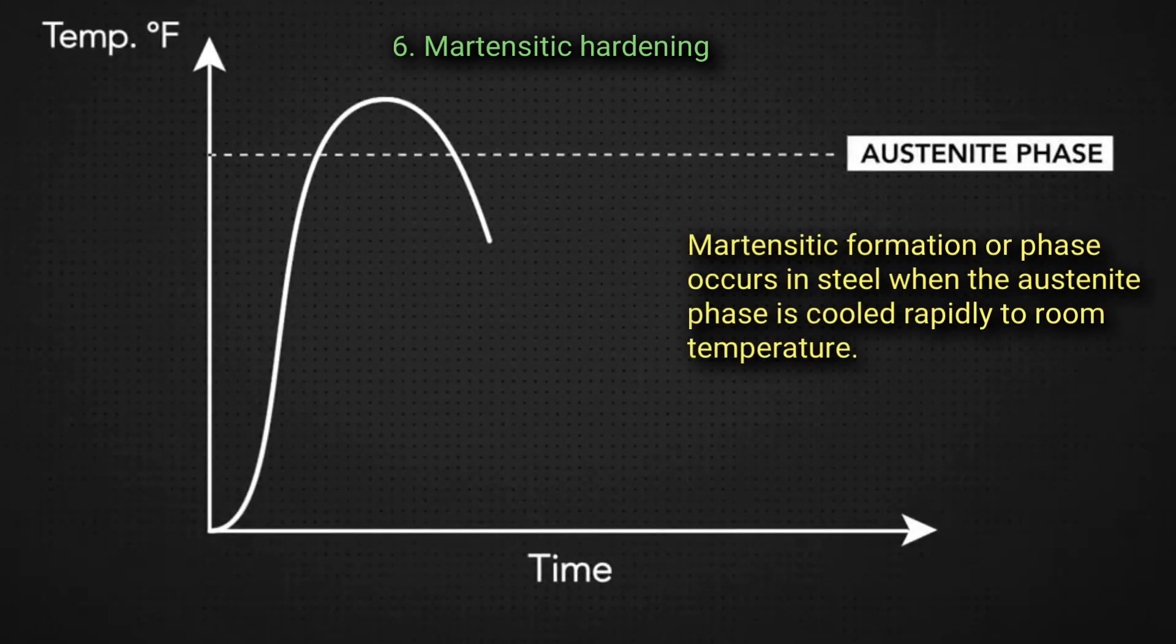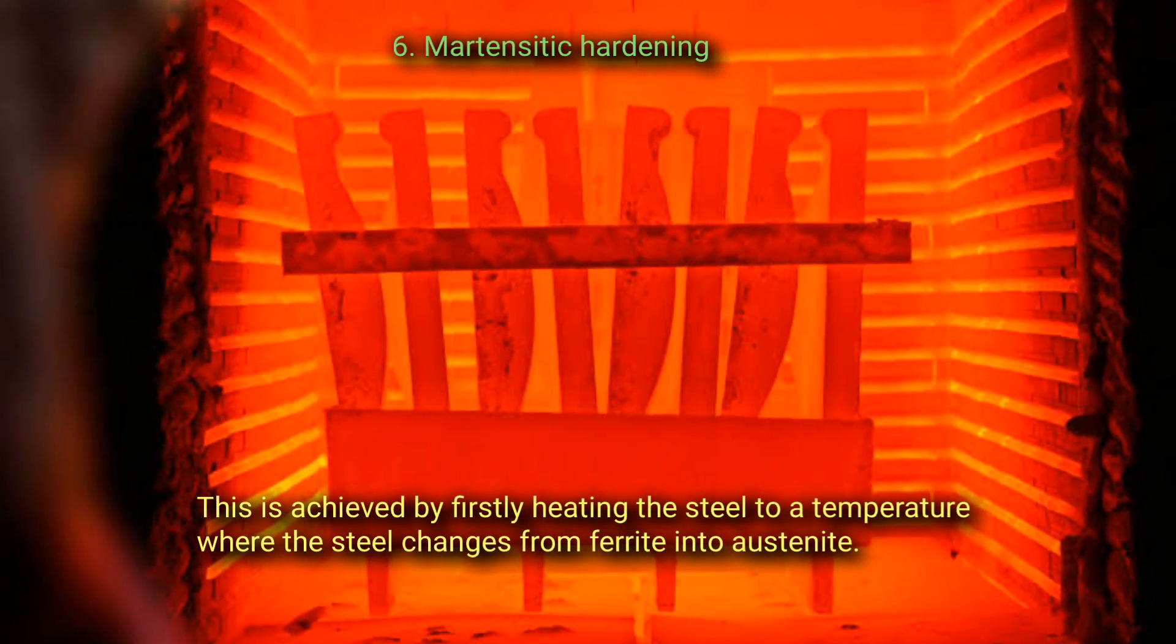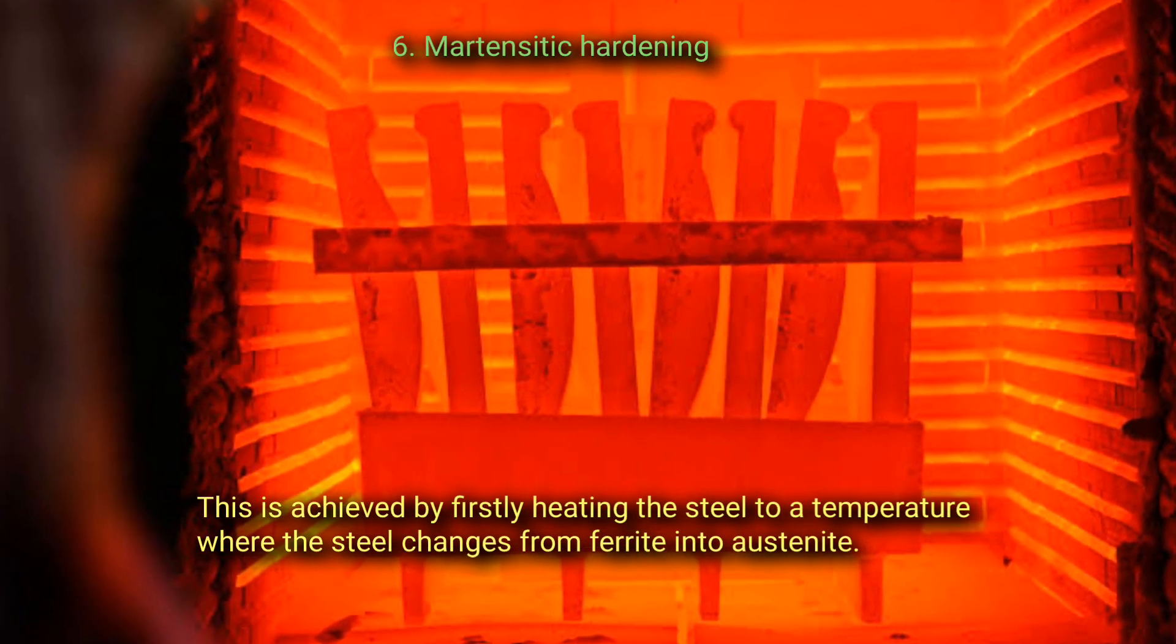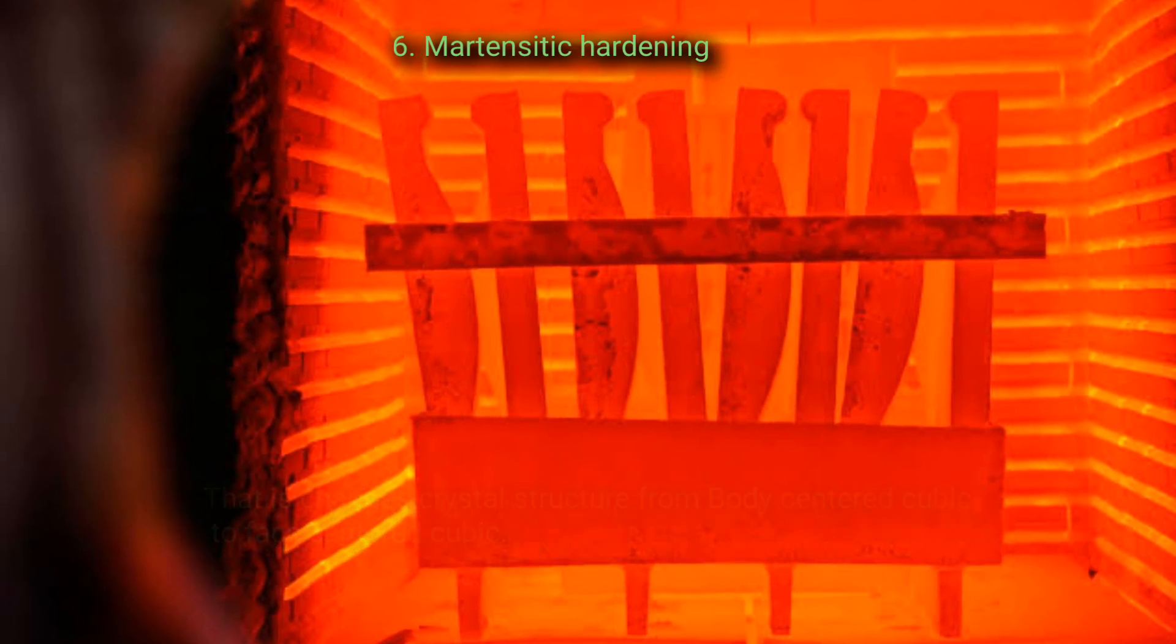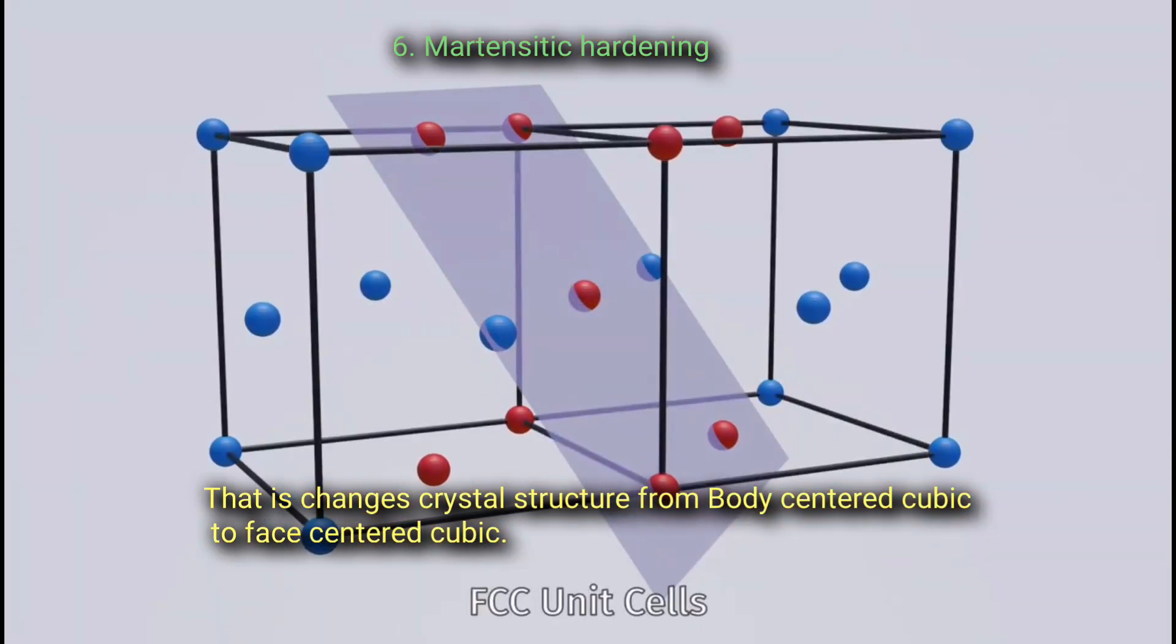Martensitic formation or phase occurs in steel when the austenite phase is cooled rapidly to room temperature. This is achieved by firstly heating the steel to a temperature where the steel changes from ferrite into austenite, that is, changes crystal structure from body-centered cubic to face-centered cubic.